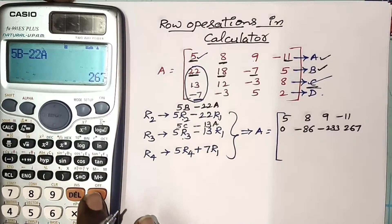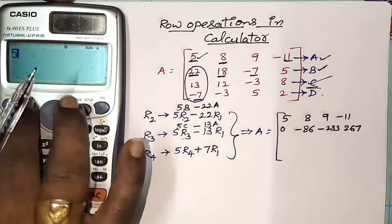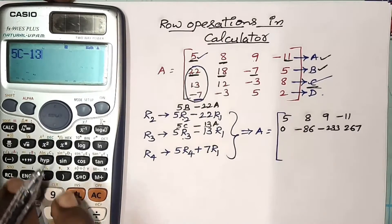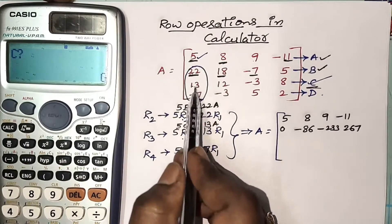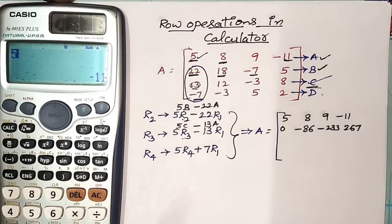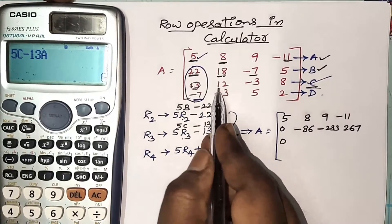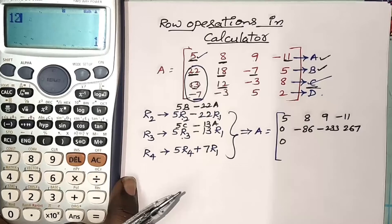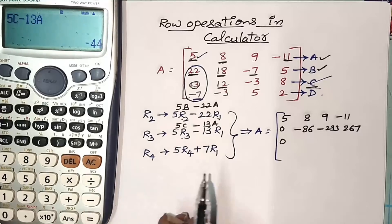Clear our screen. Now freshly we have to operate 5C minus 13A. Press 5, Alpha C, minus 13, Alpha A, then the calculate button. C value is 13, A value is 5 — I got 0. For the next element, C value is 12 and A value is 8 — I got negative 44.